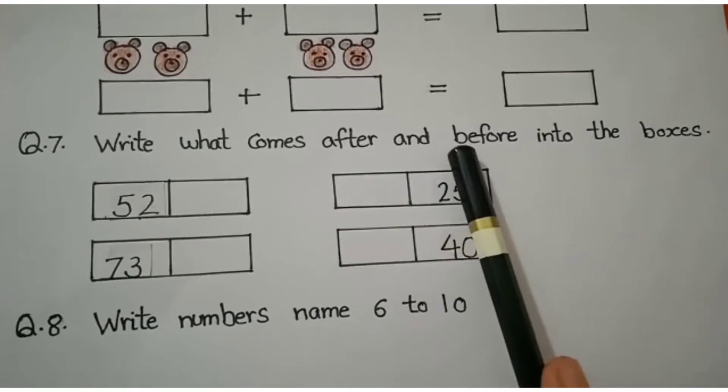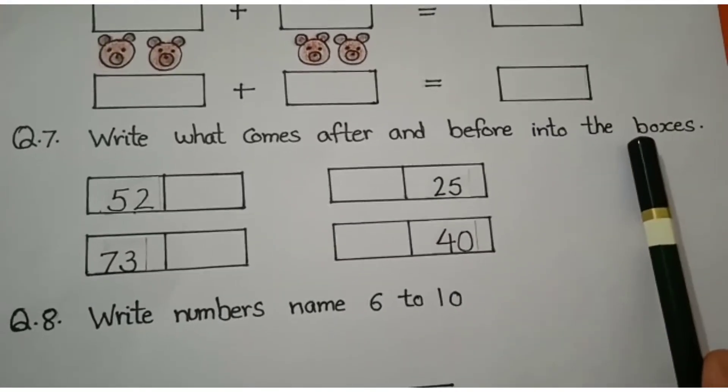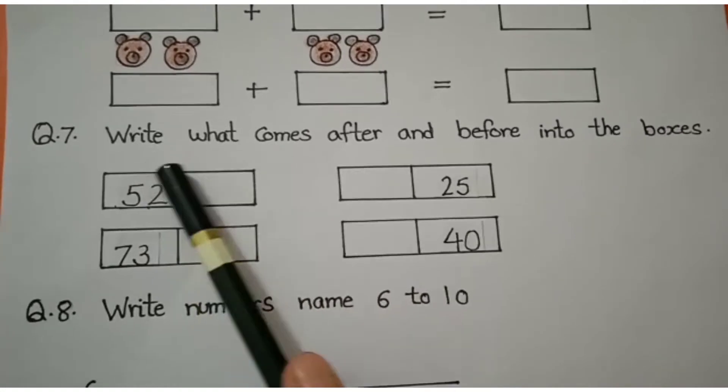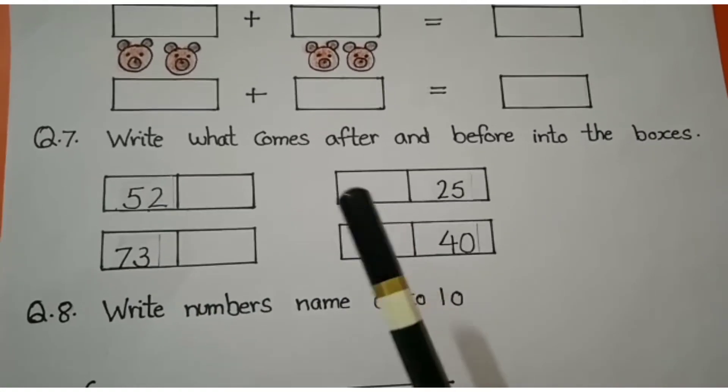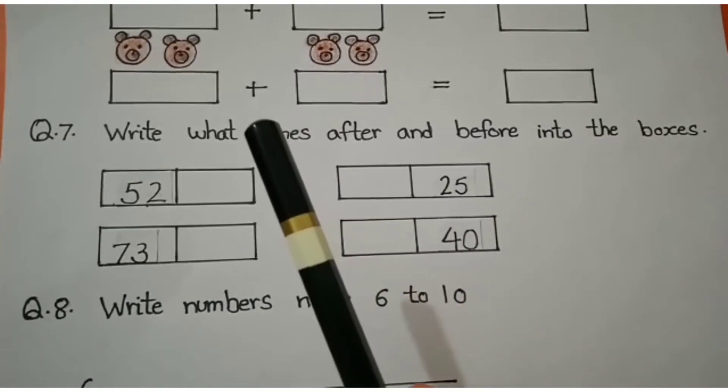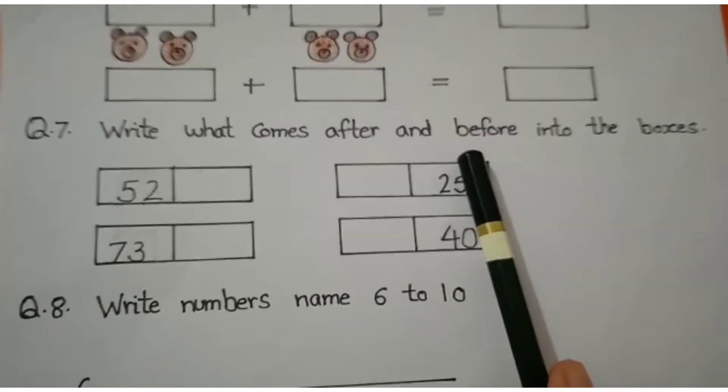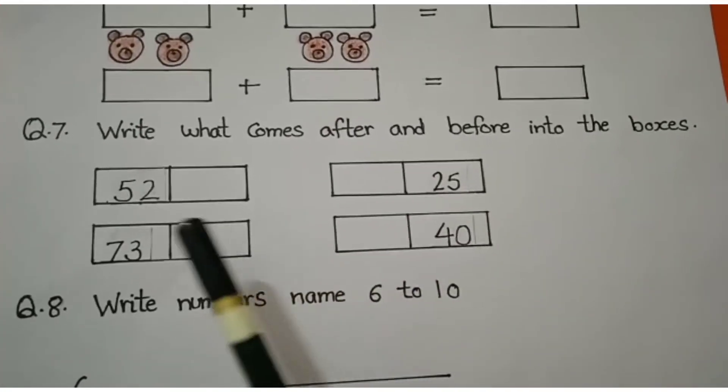Question number 7 is: Write what comes after and before into the boxes. Here you can see some boxes. And you have to write what comes after and before in these boxes.